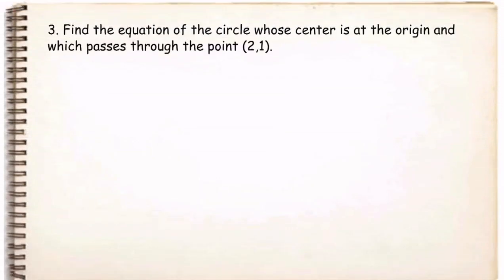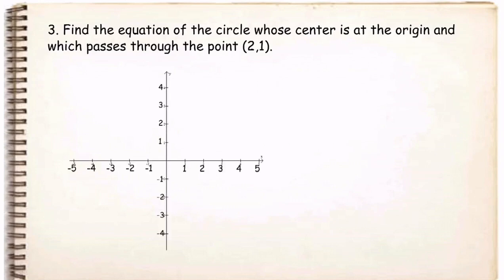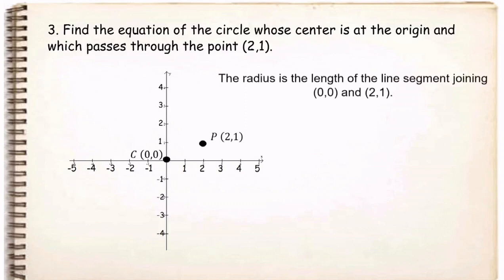For problem number 3, find the equation of the circle whose center is at the origin and which passes through the point (2, 1). The radius is not given and there is no diameter. However, there is a given point: (2, 1). If we plot this point together with the center at the origin on the Cartesian plane and connect these points, we will have a radius.